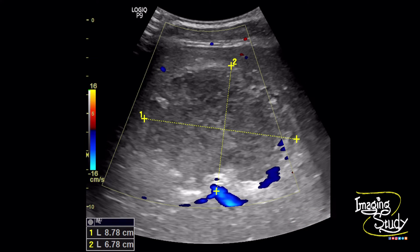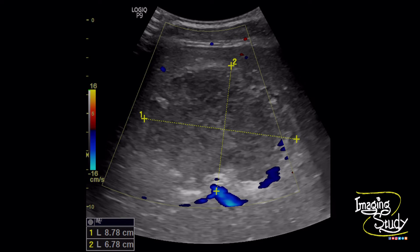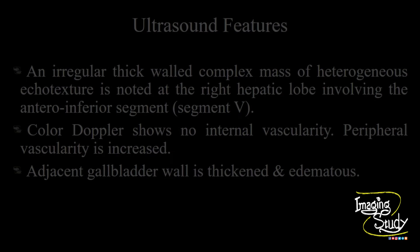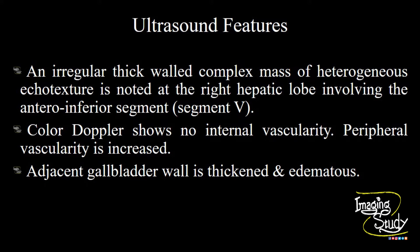So this is actually a case of pyogenic liver abscess. In summary, an irregular thick-walled complex mass of heterogeneous echotexture is noted at the right hepatic lobe involving the anteroinferior segment, that is segment 5. Color Doppler shows no internal vascularity; peripheral vascularity is increased due to the inflammatory process. The adjacent gallbladder wall is thickened and edematous due to adjacent inflammation.